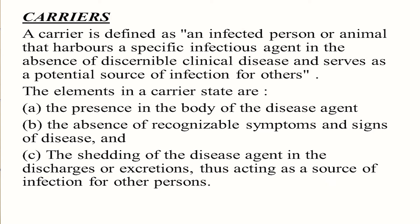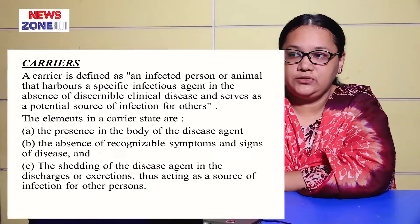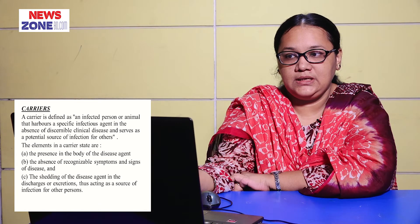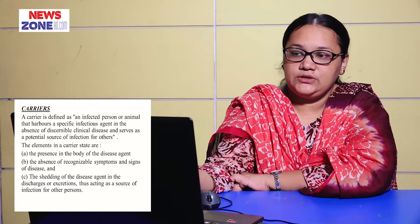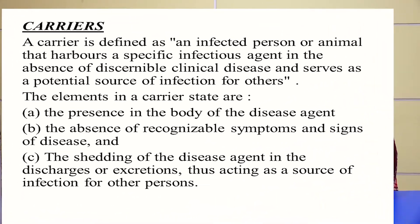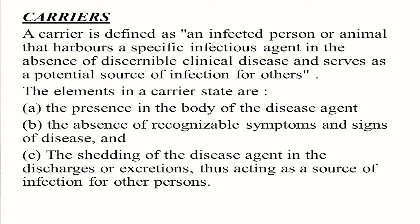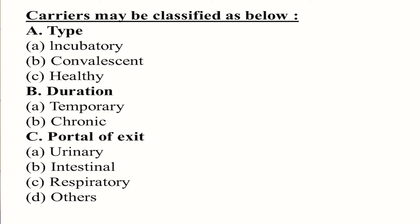A carrier is defined as an infected person or animal that harbors a specific infectious agent in the absence of discernible clinical disease and serves as a potential source of infection for others. The elements in a carrier state are: the presence in the body of the disease agent, the absence of recognizable symptoms and signs of disease, and the shedding of the disease agent in discharges or excretions, thus acting as a source of infection for other persons. Carriers are classified by type as incubatory, convalescent, and healthy.